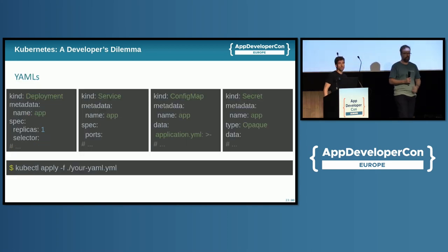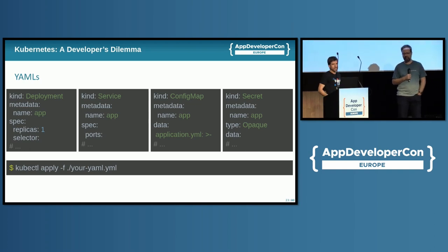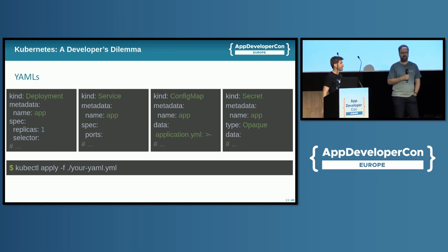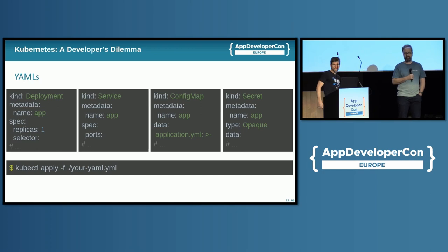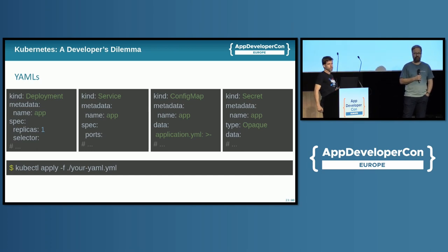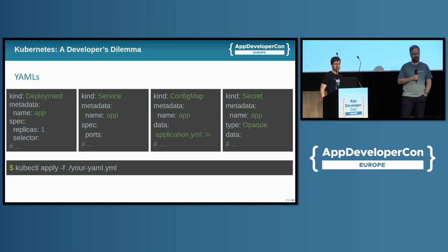Similarly, for Kubernetes, you will also need to create and maintain these YAML files. The most simple deployment requires at least four files: a deployment, service, config map, and secret. But obviously you will need more resources — maybe an ingress, a volume, auto-scaling capabilities, and so on. Each of these resources has a very specific syntax that you need to understand, master, and maintain. And just like Dockerfiles, you'll need specific tools in your environment to interact with these files and deploy them to your cluster — for example, kubectl apply.